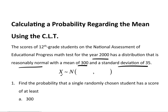That means that x is distributed normal with a mean of 300. If the standard deviation is 35, that means the variance is 35 squared. Remember, this notation has the order mu and sigma squared — mean and variance.